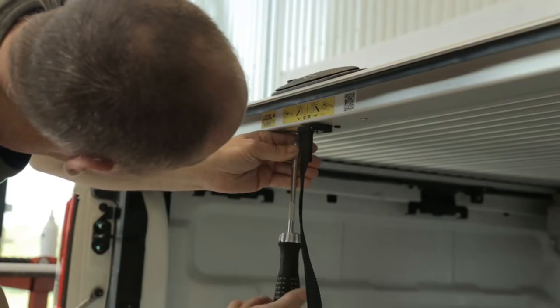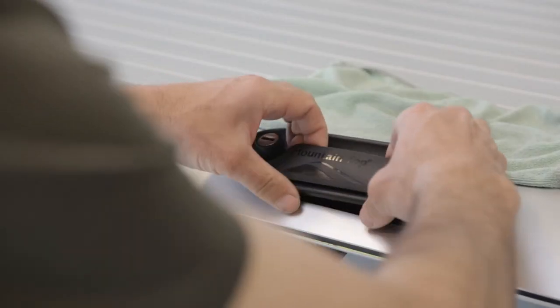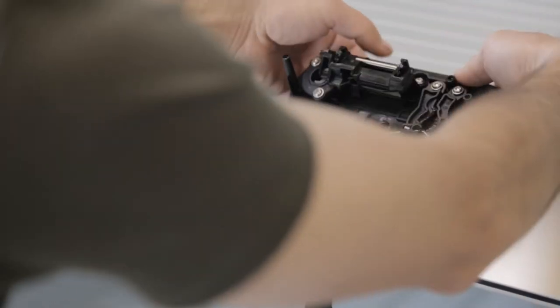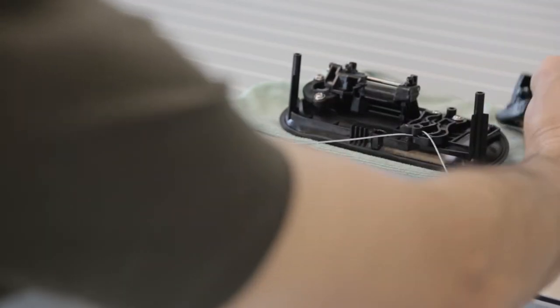Remove four small screws on the bottom side. Lift locking handle up and place it on a piece of cloth. Locking activator is lifted out along with it.